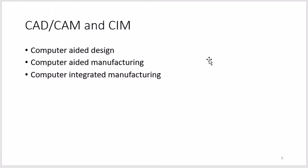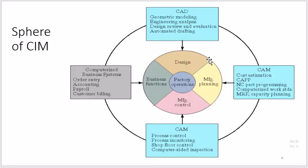Computer Integrated Manufacturing means that all departments of an industry — designing, manufacturing, sales and marketing — are integrated into one single computer system. All data is available on that system and anyone can access it. Everything is controlled by that central computer.